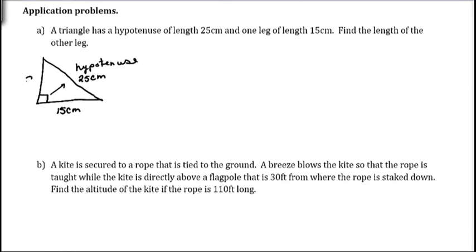The legs are always called A and B, and the hypotenuse is always called C on a right triangle. And the Pythagorean theorem is A squared plus B squared equals C squared. So, it's the sum of the legs squared is equal to the hypotenuse squared.